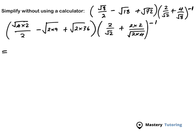Alright. According to the surd rules — let me explain this part — if we have x and y under a square root sign, this is the same as square root of x times square root of y. That's according to the rules, so we can apply the same thing here.